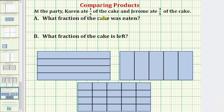At a party Karen ate 1 fourth of the cake and Jerome ate 3 fifths of the cake. We're asked what fraction of the cake was eaten and what fraction of the cake is left. We'll solve this problem two ways: first by modeling the fractions using rectangles that represent one cake, and then by solving it using a common denominator.